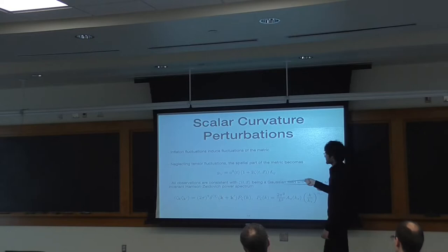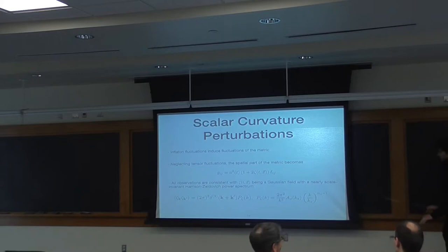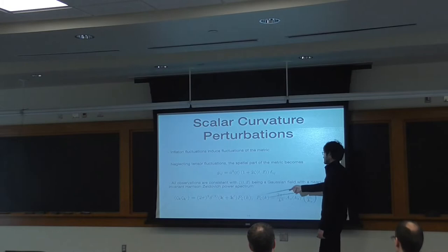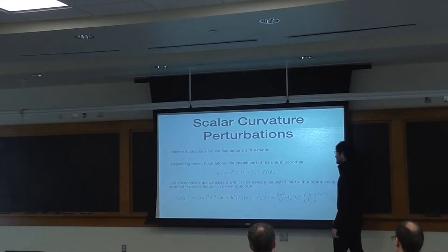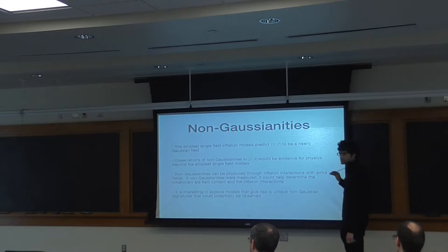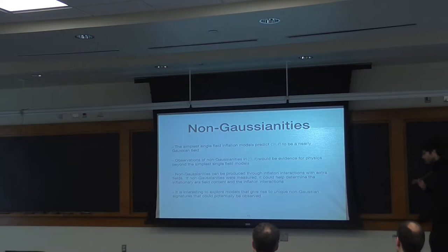All observations to date of the CMB and large-scale structure are consistent with the scalar curvature perturbation zeta being a Gaussian field with Gaussian statistics. We have not yet seen connected three-point functions or four-point functions of zeta. The power spectrum of this Gaussian field is nearly scale-invariant, satisfying a nearly Harrison-Zel'dovich power spectrum, which means it goes like one over k cubed times k to some small power. Now I'm going to talk about non-Gaussianities, which again we haven't seen, but we'll discuss how they could be seen in large-scale structure or possibly the CMB.